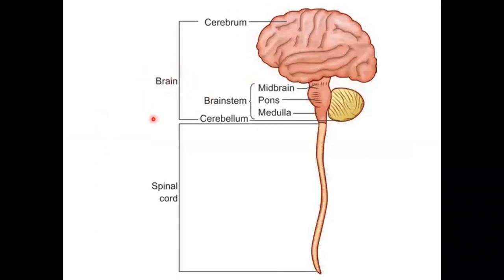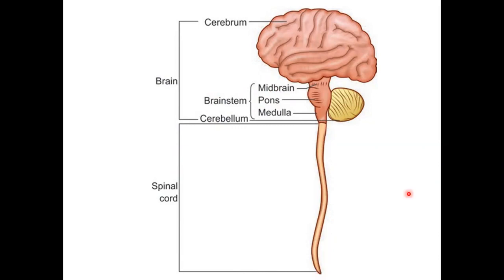The central nervous system consists of the brain and the spinal cord. The brain consists of the cerebrum, midbrain, pons, and medulla. The midbrain, pons, and medulla together constitute the brainstem, along with the cerebellum. The spinal cord extends from the lower aspect of the medulla oblongata to the L1 vertebra in the adult.